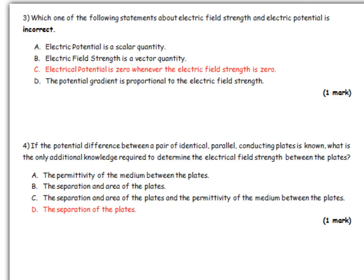So we've got this third question here. Which one of the following statements about electric field strength and electrical potential is incorrect? Let's go through these one by one to analyze them correctly. Electric potential is a scalar quantity. This is true, it's just a fact that you must know when you're looking at this fields part of the course.